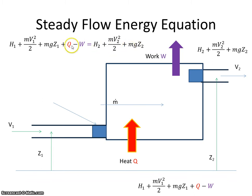So if I rearrange those equations and bring the Q and the W to one side, I have Q minus W, so that's on this side. This is the H2 minus H1. We have the mV2² minus mV1² and we have the mgZ2 minus mgZ1.